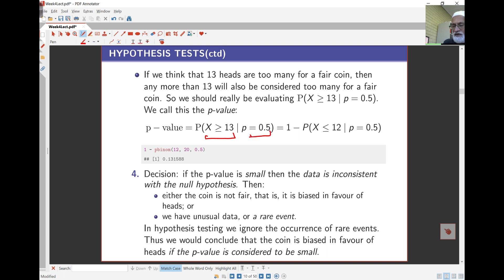What you notice here is I've got X bigger than or equal to 13. My H1 value was P bigger than 0.5. You'll find always that this direction here and this direction here will be the same. That's one way of making sure you're going in the right direction. I can work it out from R. Here's the probability of X bigger than or equal to 13, given P is 0.5, is 1 minus probability of X less than or equal to 12, given P is 0.5. There's my R value, and I'm getting 0.1316.